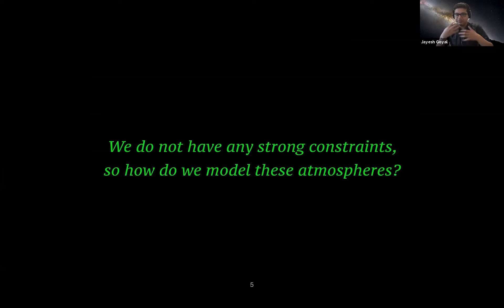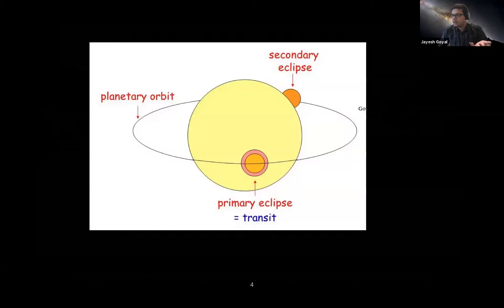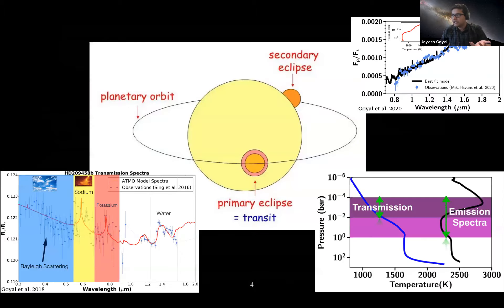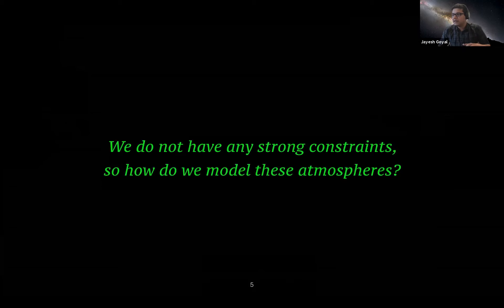For hot Jupiters and warm Neptunes, we don't have strong constraints. We focus on these planets because they offer the best signal-to-noise ratio since they are very close to their host stars. The next question is: how do we model these atmospheres?